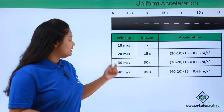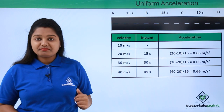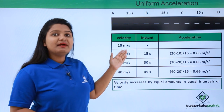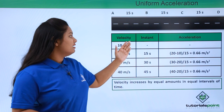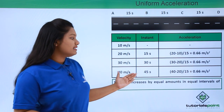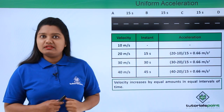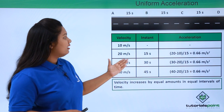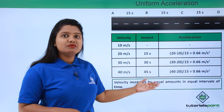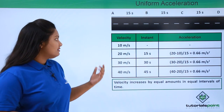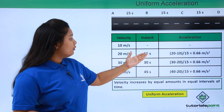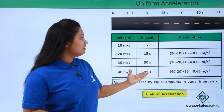At point D, that is after 15 more seconds, the velocity became 40 meters per second. We notice here that the velocity of the car increases by equal amounts — that is 10 meters per second — every 15 seconds. In other words, the velocity increases by equal amounts in equal intervals of time. Such a motion is associated with uniform acceleration.